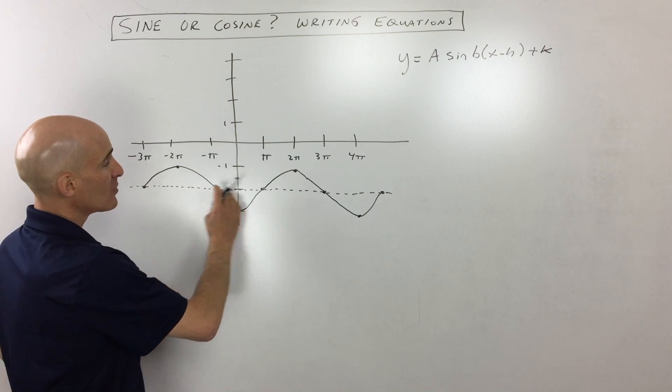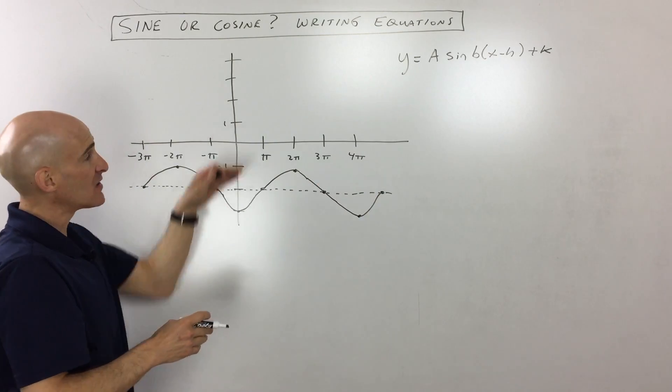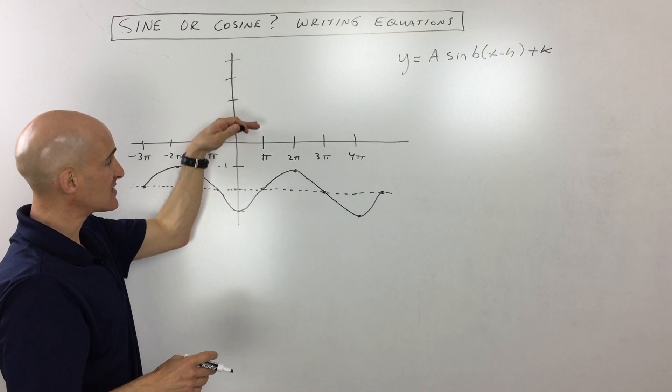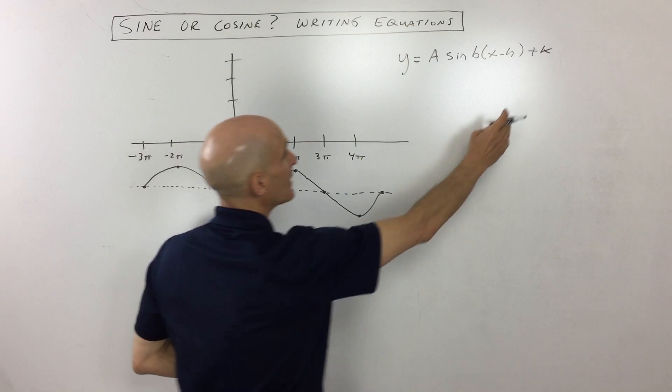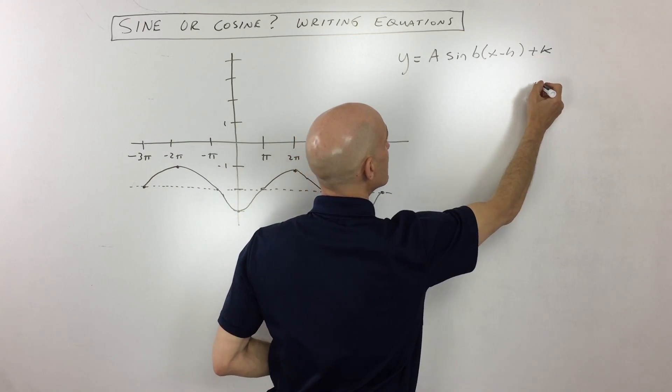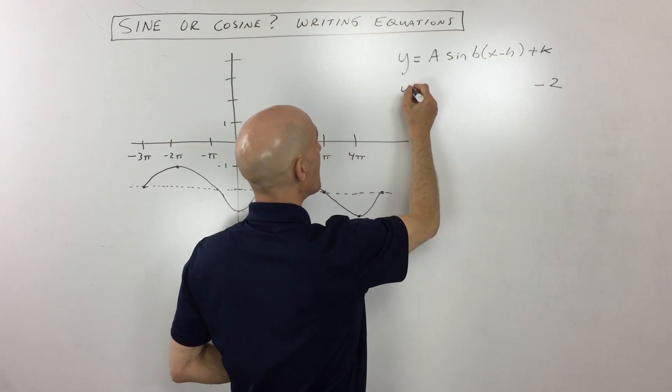Because what this midline tells us is what the vertical shift is. In this case, the graph is shifting down two. So no matter what equation that we write, it's always going to have a K value or a vertical shift of negative two.